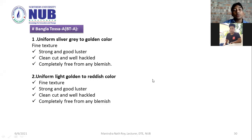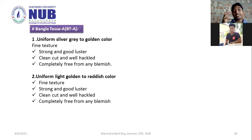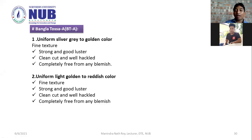Jute is in uniform golden reddish color with fine texture. The yellow air classification is a sub-classification. You can say uniform silver gray to golden color, or uniform light golden to reddish color.